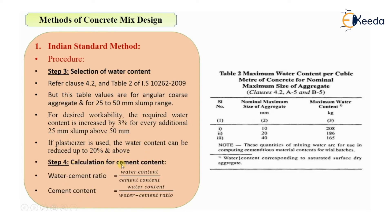The fourth step is calculation of cement content. We know the formula: water-cement ratio = water content / cement content. Rearranging, cement content = water content ÷ water cement ratio. Water content was found in Step 3 and water cement ratio in Step 2, so you can now determine the cement content.